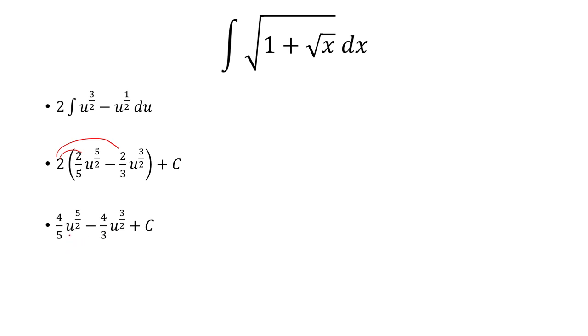We had let u be 1 plus the square root of x. If I replace that, my final answer is 4 fifths times the quantity 1 plus square root of x to the 5 halves minus 4 thirds times the quantity 1 plus square root of x to the 3 halves plus c.